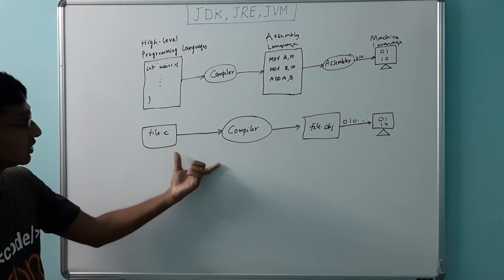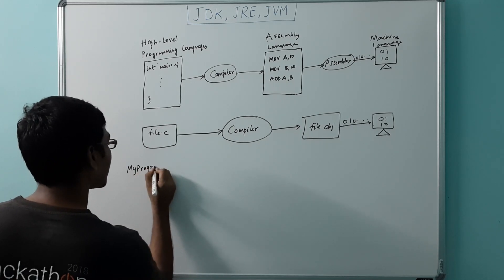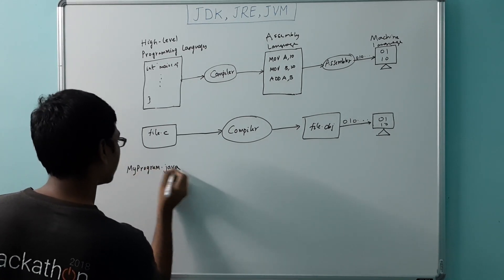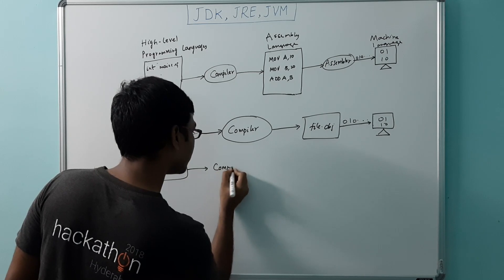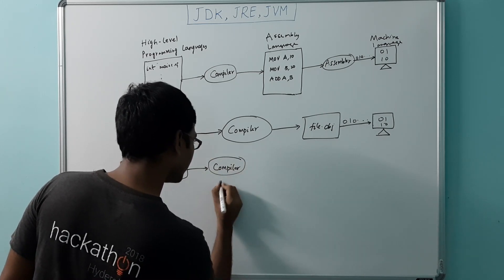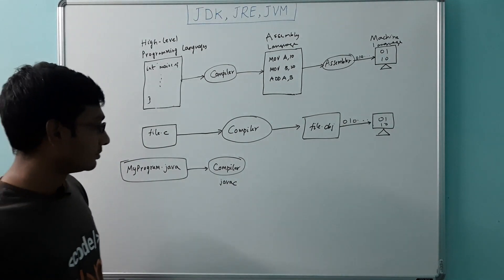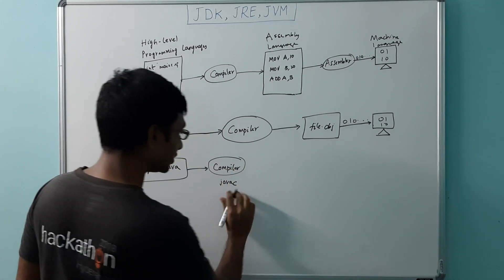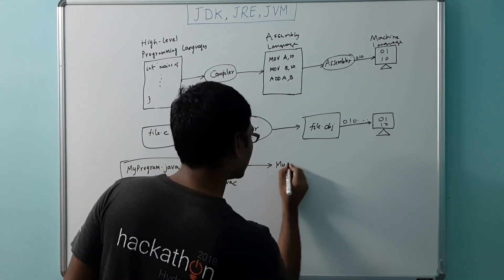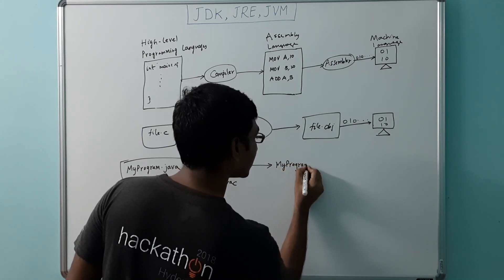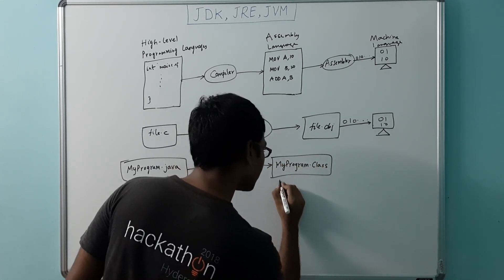Now let us relate this with Java. We have a program called, say, MyProgram.java. This is compiled by the Java compiler, javac, which is found in the JRE bin location. After compiling this code, we get a class file — MyProgram.class — which has the bytecode in it.